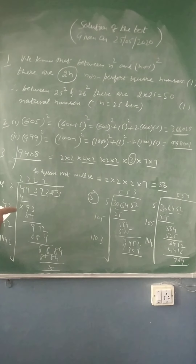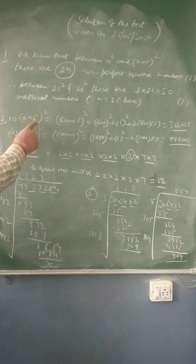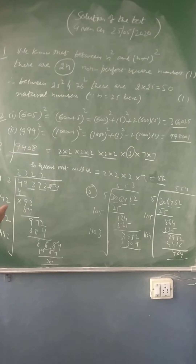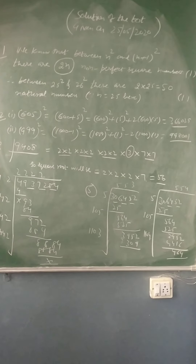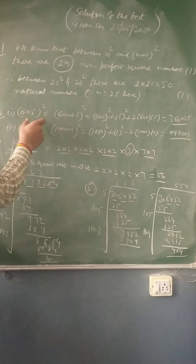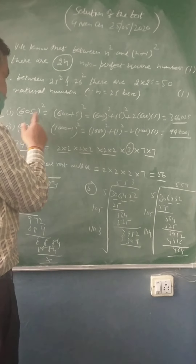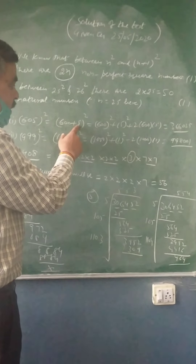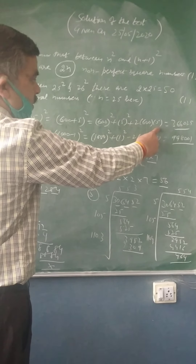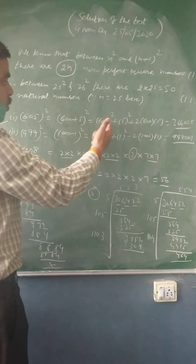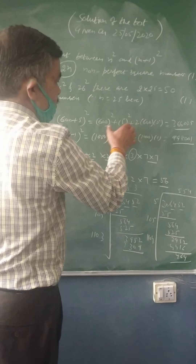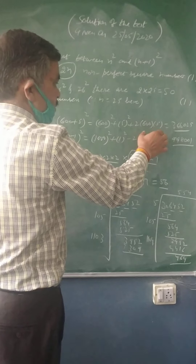Your second question was: find the square of 605 and 999 using suitable identities. For 605, you split it in the form (a+b)², applying the identity a² + b² + 2ab. You put the appropriate values of a and b for 605 and carry out the calculation.